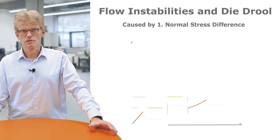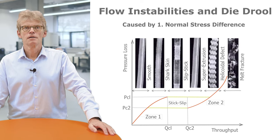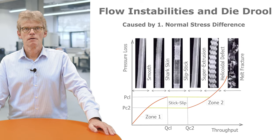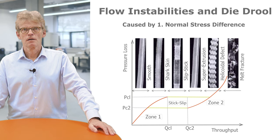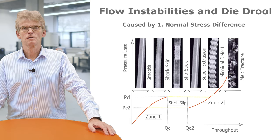Flow instabilities occur when you increase the throughput by extrusion. First it starts with a smooth extrudate, and then the so-called sharkskin effect is occurring, and the onset can directly be related to first normal stress difference.